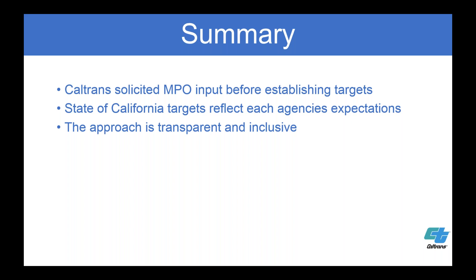So far, no MPO has notified us that they're not adopting the statewide target. In a nutshell, the approach was to get their input early on — we did it in the TAMP for the 10-year targets, so moving to two- and four-year was just a shorter version of the same thing. The targets we're reporting to the federal government for PM2 reflect each agency's individual expectations. The approach is transparent and inclusive — it's the one approach that really resonated with everybody in our workshops.